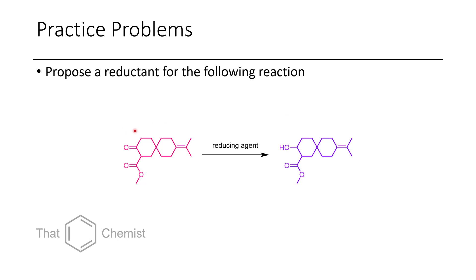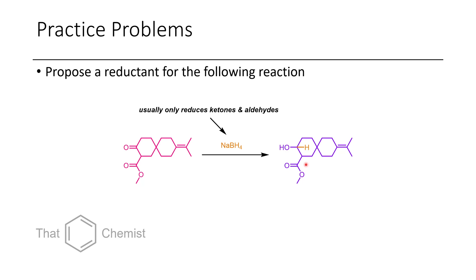In this first problem, we have a keto ester, and we treat it with some sort of reducing agent, and we get this hydroxy ester product. The key step here is knowing whether or not your reducing agent will reduce your ester or your ketone. We're going to choose sodium borohydride, because typically sodium borohydride will only reduce ketones and aldehydes. Occasionally you'll see sodium borohydride reducing esters, but ketones tend to be much more electrophilic and they react much faster. Additionally, this alkene is so far away that we don't have to worry about any conjugate addition happening, because this is not a conjugated alkene.